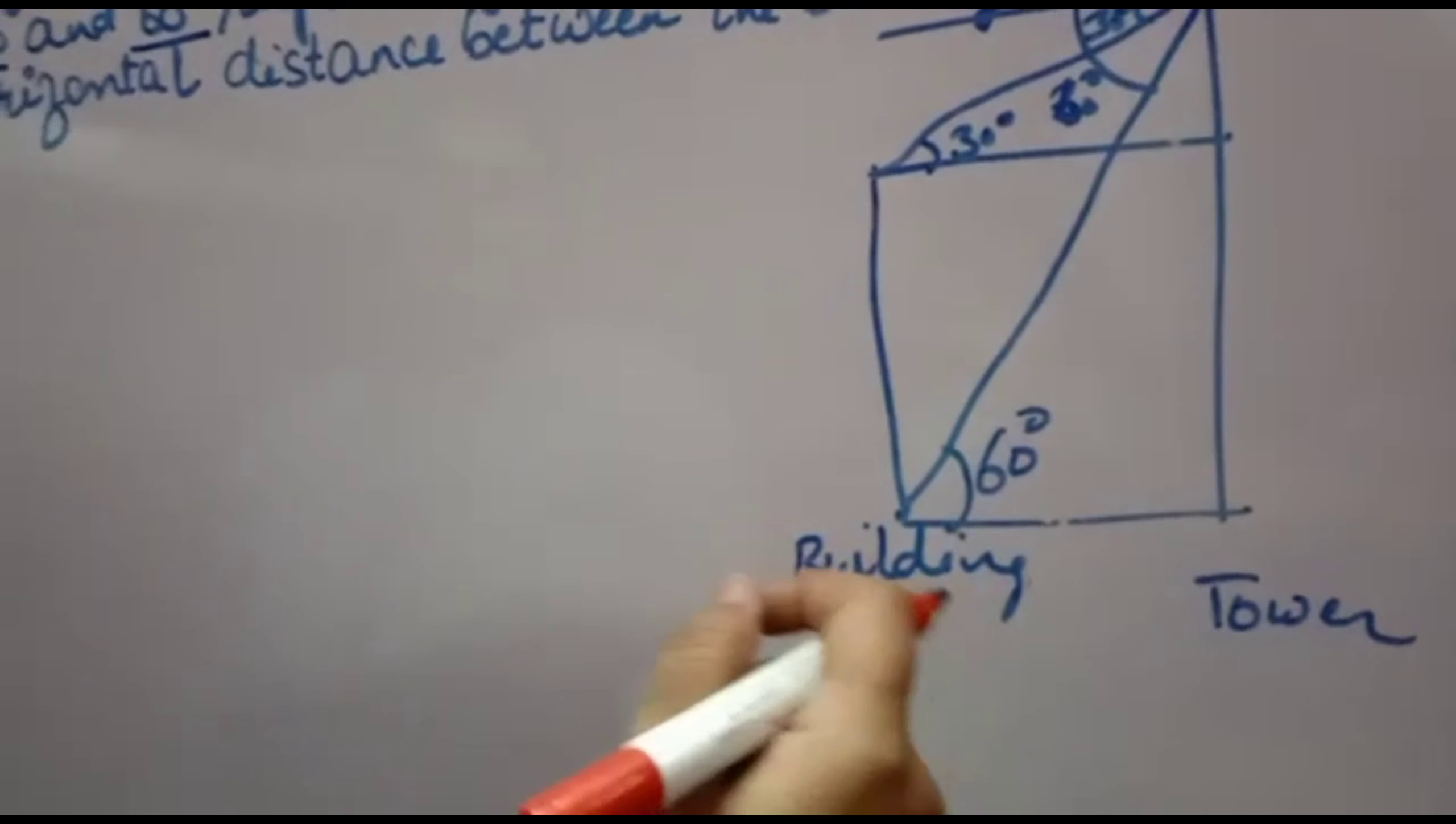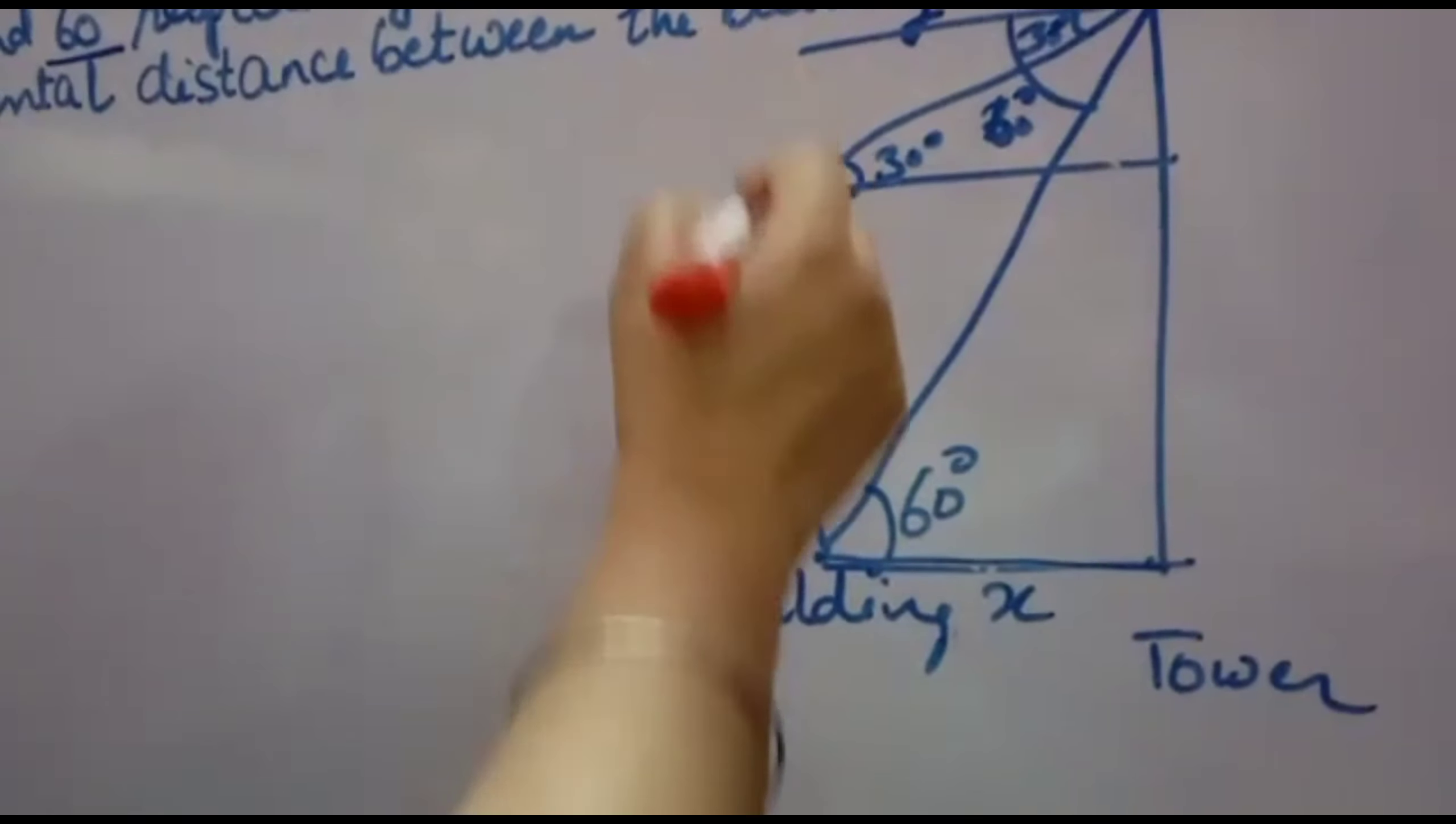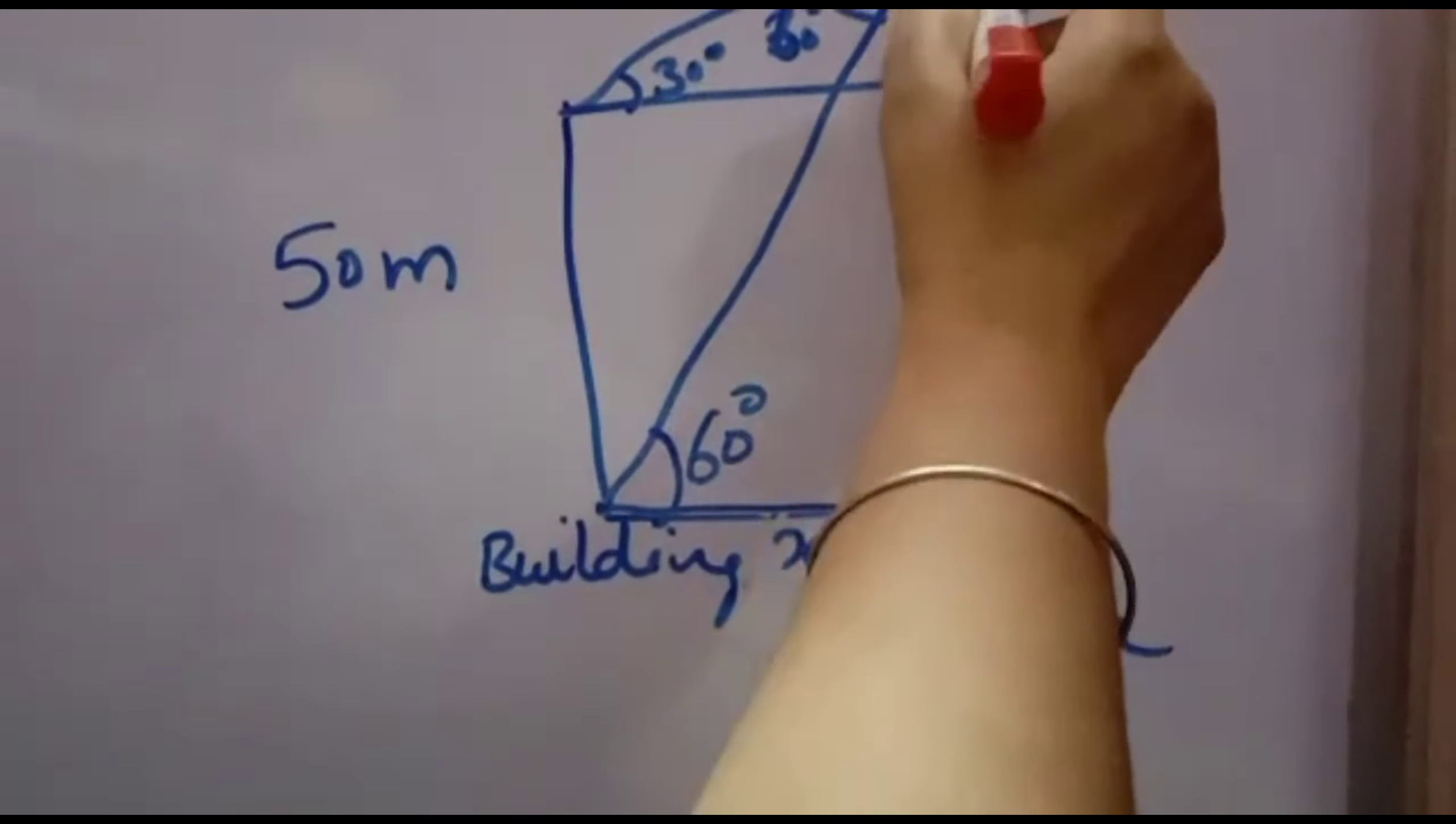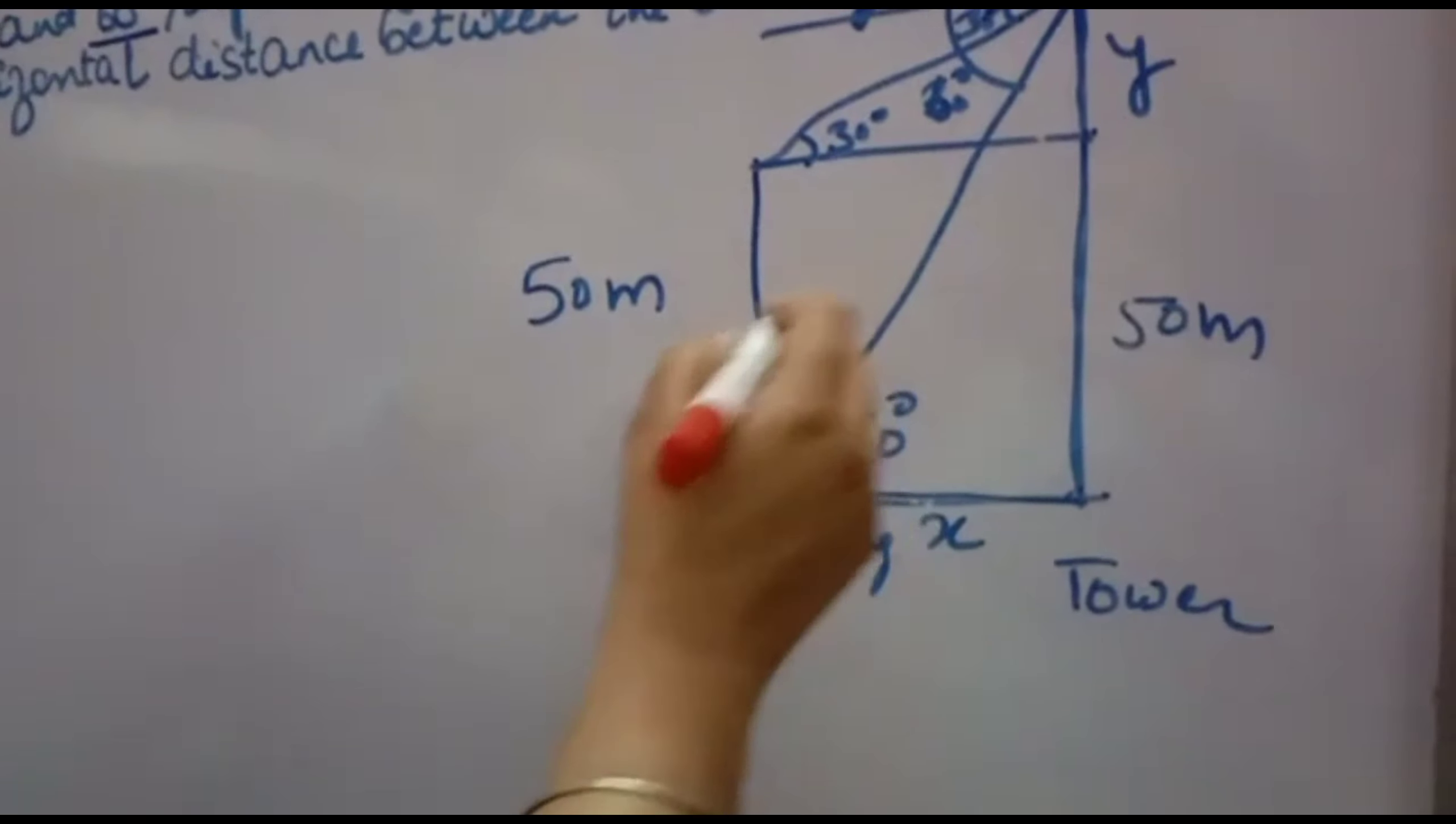Now easy only, you have to find the horizontal distance between. Suppose this distance is x you want to find and you have to find height of the tower. Now height of the building is given 50 meter. So this is also 50 meter because they are equal to each other. Suppose this is y. So you will find y and you will add 50. You will get height of the tower. And you will find x. You will get the distance between the tower and building.